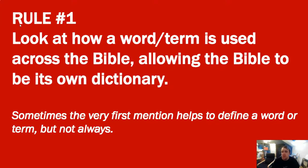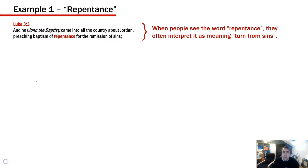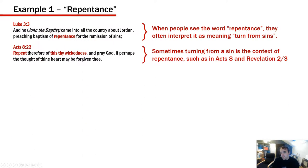In terms of understanding biblical words and definitions, the first rule is to look at how a word or term is used across the Bible, allowing the Bible to be its own dictionary. Sometimes the very first mention helps to define a word or term, but not always. For example, in Luke 3:3, John the Baptist came preaching baptism of repentance for the remission of sins. People often interpret repentance as simply meaning turning from sin.